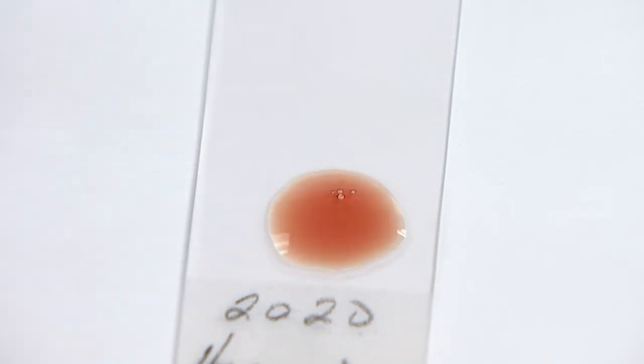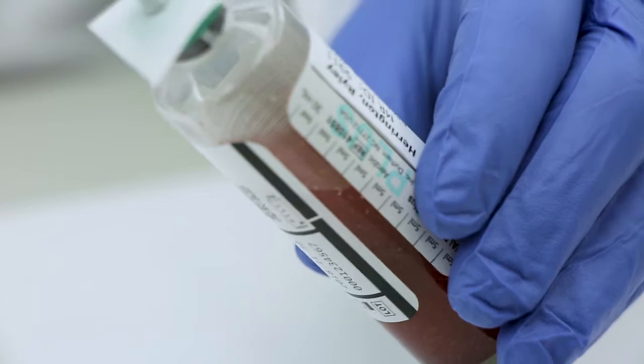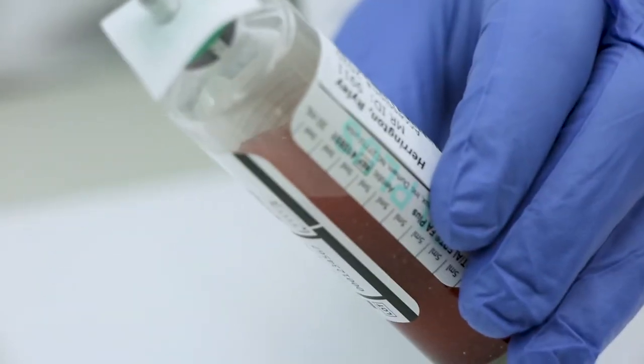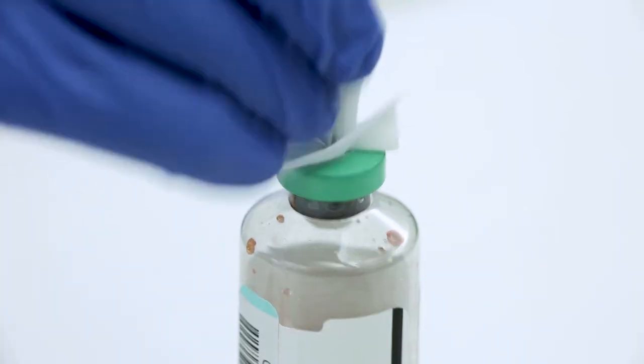Place one to two drops on the slide. If drops stop coming out, tilt bottle upward for a few seconds, then horizontal again for a few seconds, and then downward again until drops start falling. If no drops come out, change the subculture needle.